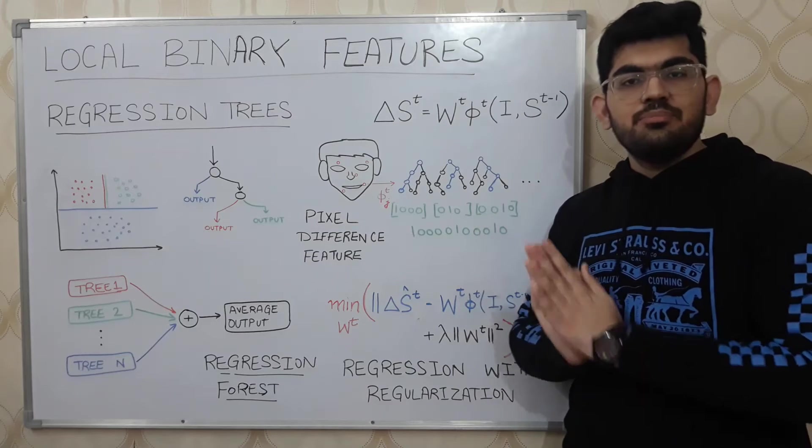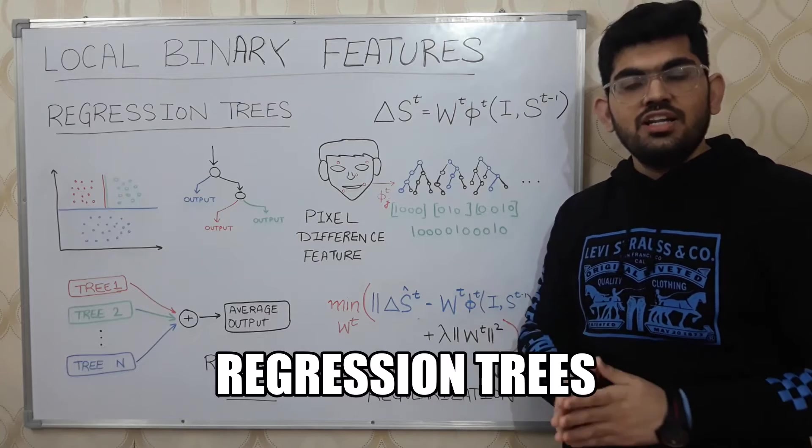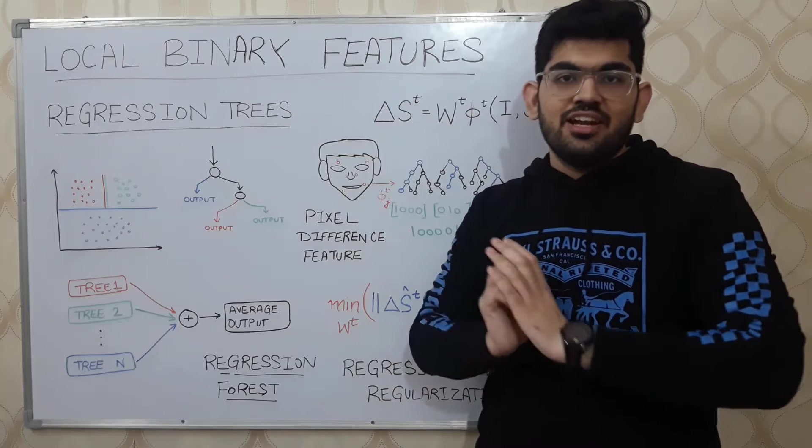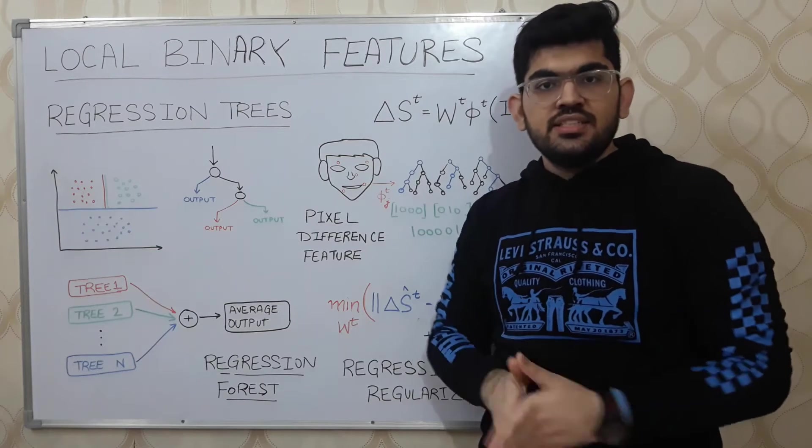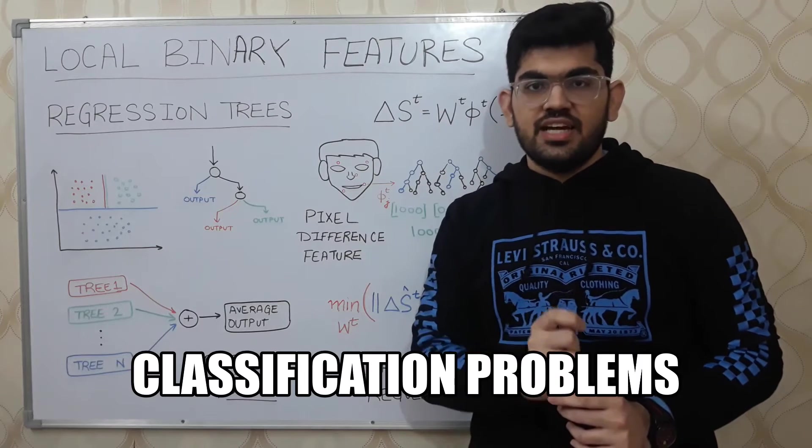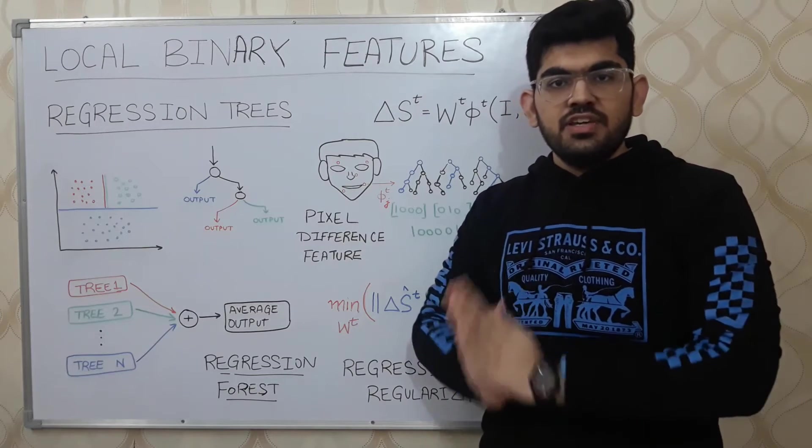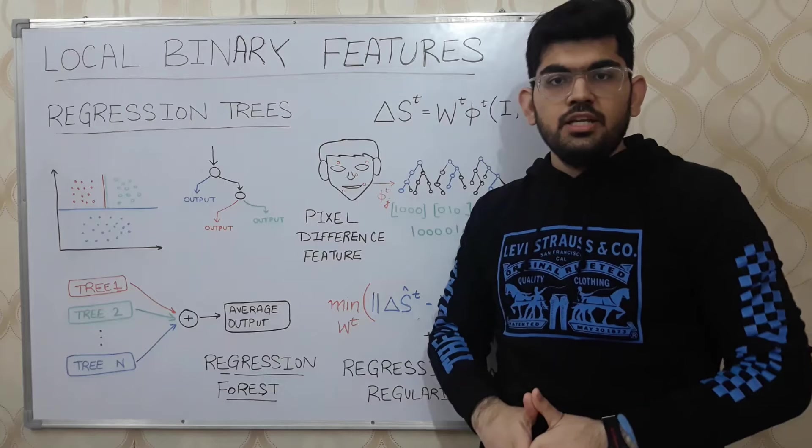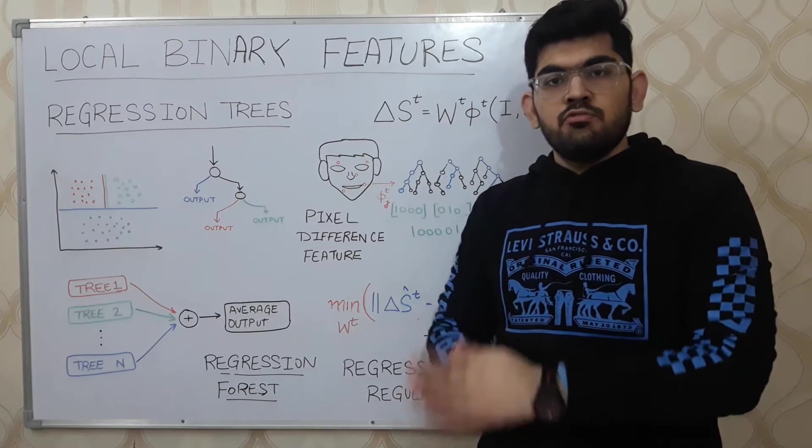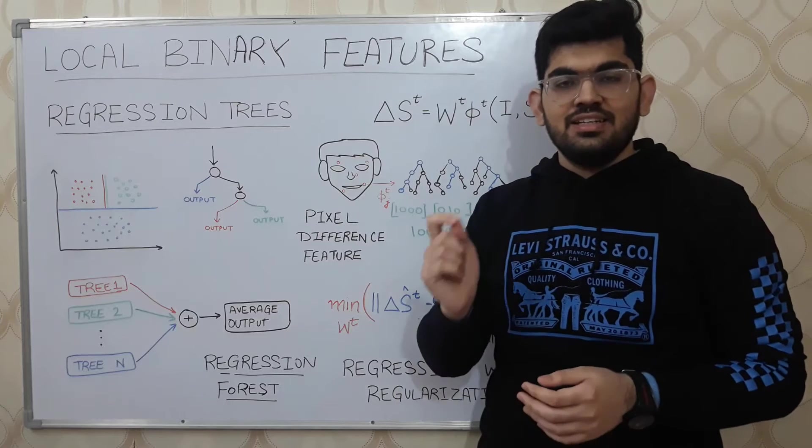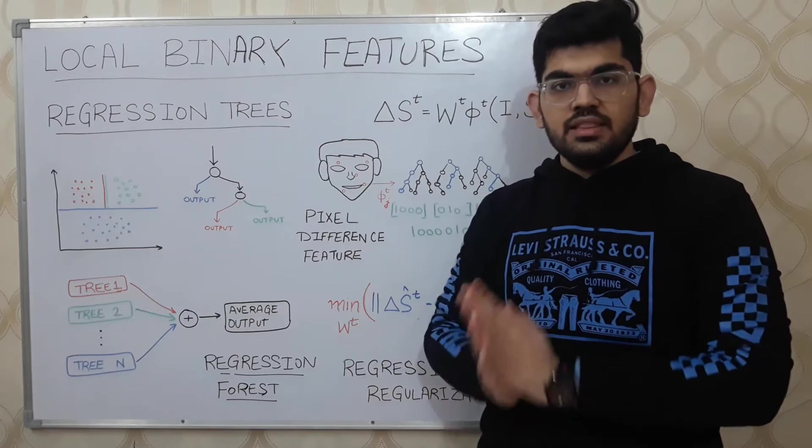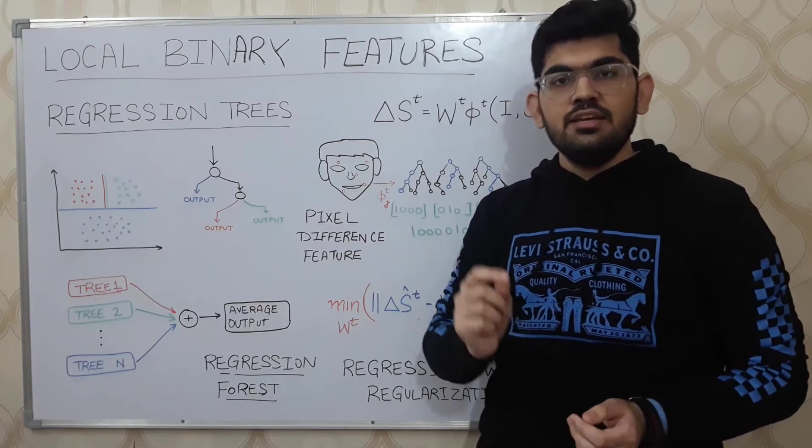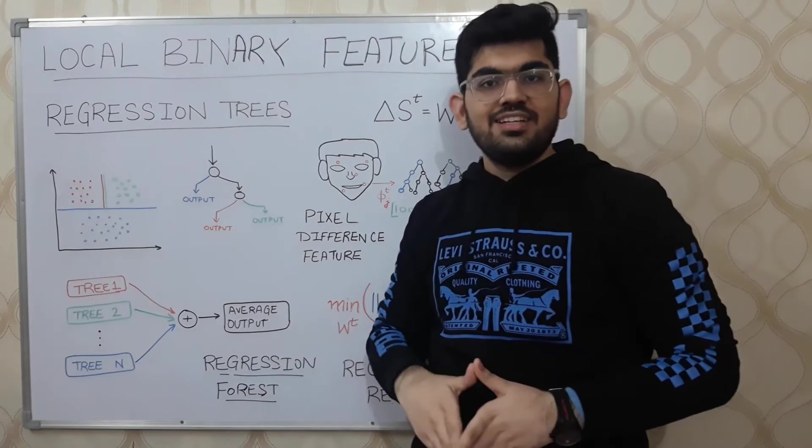Now let us see how Phi T is learnt. Phi T is actually computed using a machine learning model called regression trees. Regression trees are an extension to an already existing machine learning model called decision trees. Decision trees are mostly used for classification tasks. In classification tasks, we are required to predict the output from a number of different classes. One particular example of a classification problem would be detecting given an image whether it is a cat or a dog. In this particular problem, we have only two classes cat or dog and we are required to predict only one of them.